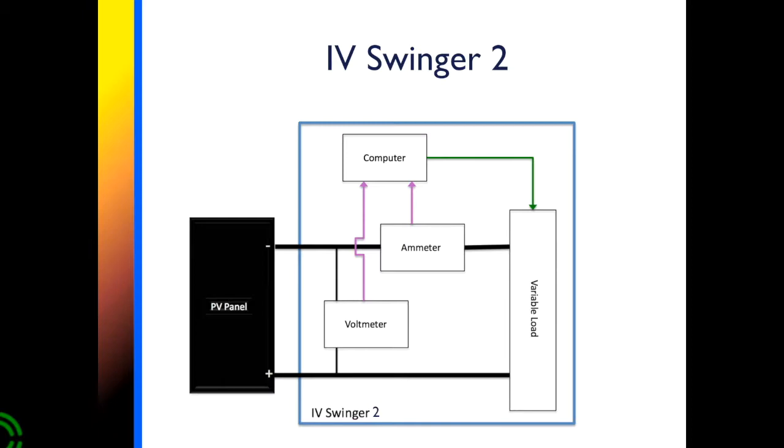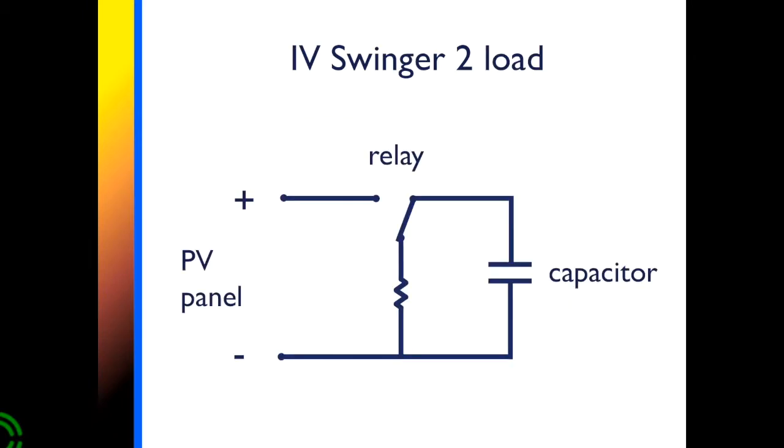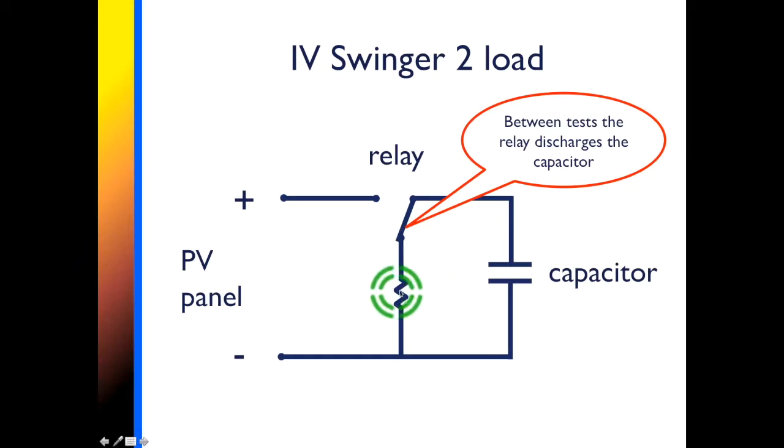IV Swinger II is similar but what it uses for a variable load is quite different. IV Swinger II uses a relay and a capacitor for the load. Between tests the relay discharges the capacitor through a small bleed resistor. That's this.